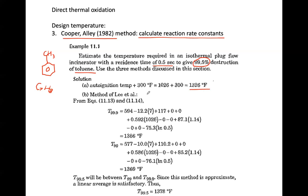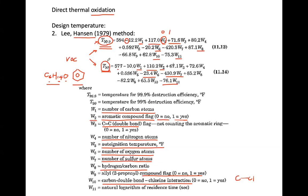For the Ross method, it's simply 300°F above the auto-ignition temperature. Looking up toluene's auto-ignition temperature, which is 1026°F, and adding 300°F gives us 1326°F. That's as simple as that. For the Lee-Hansen method, we know the chemical formula C7H8, so we plug in all the parameter values to find T99.9 and T99.